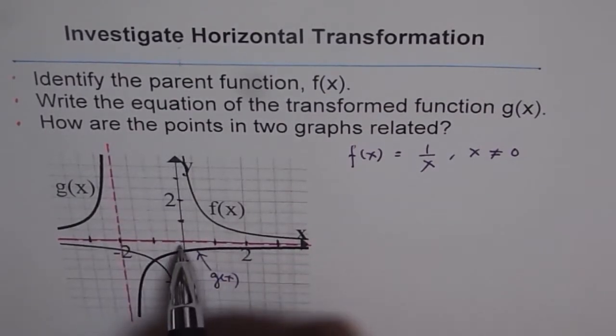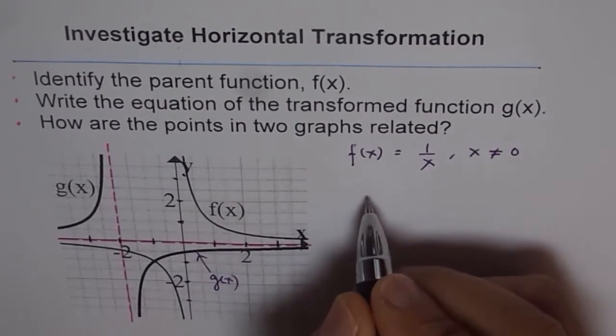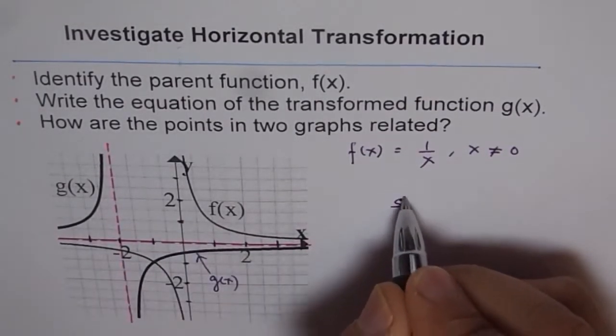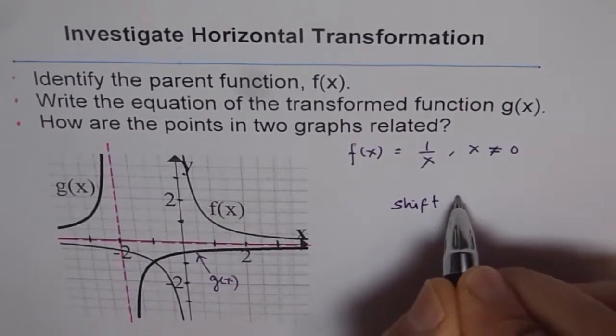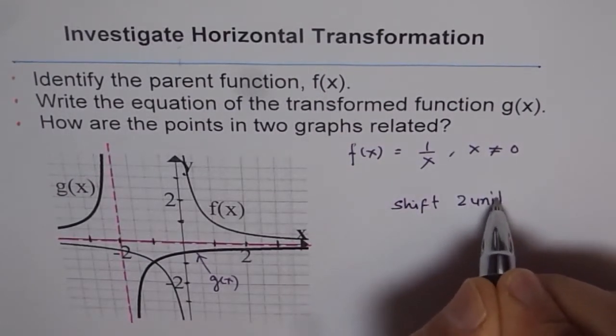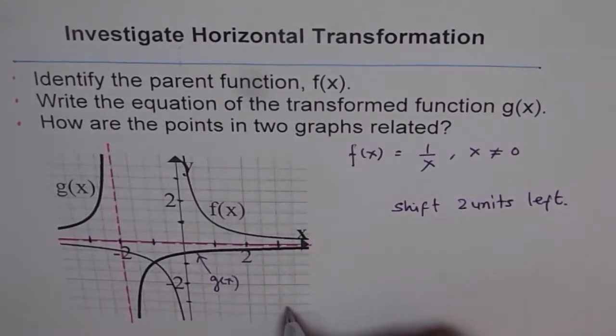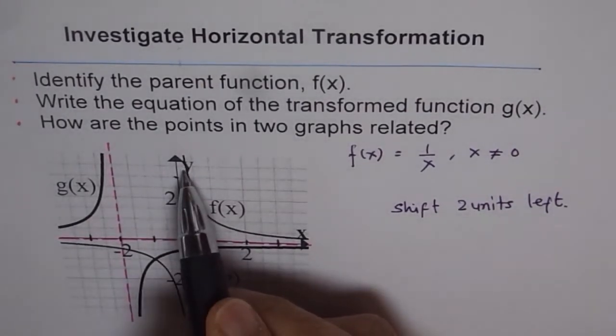So there is a shift two units to the left. This is one thing you notice. And second thing what you notice is that instead of being in quadrant one and in quadrant three, it has got reflected also.